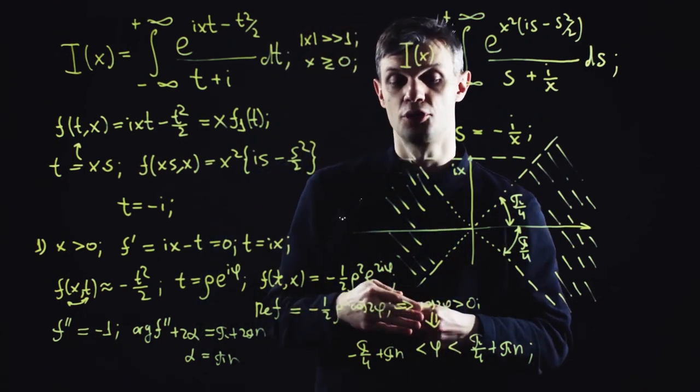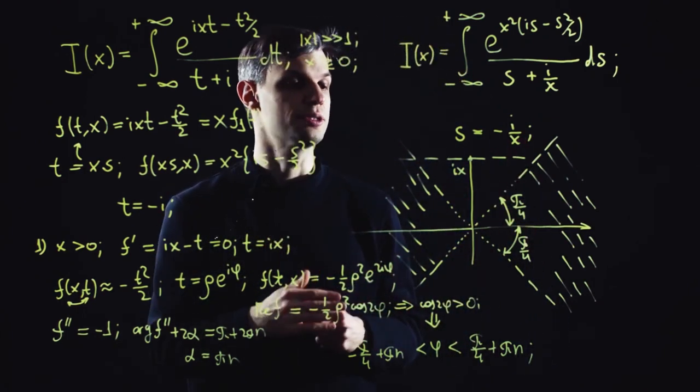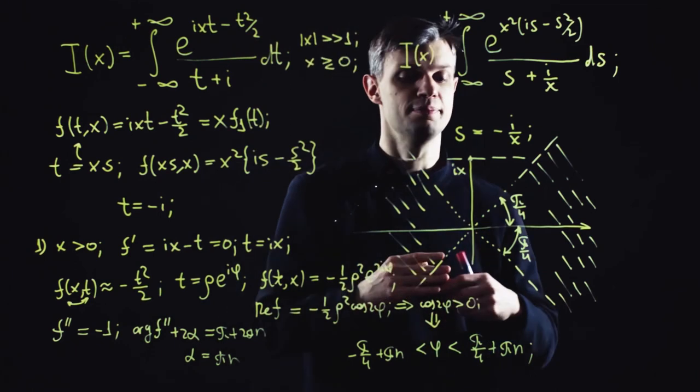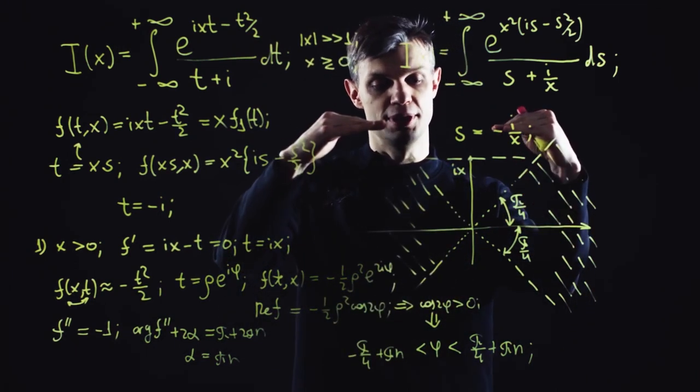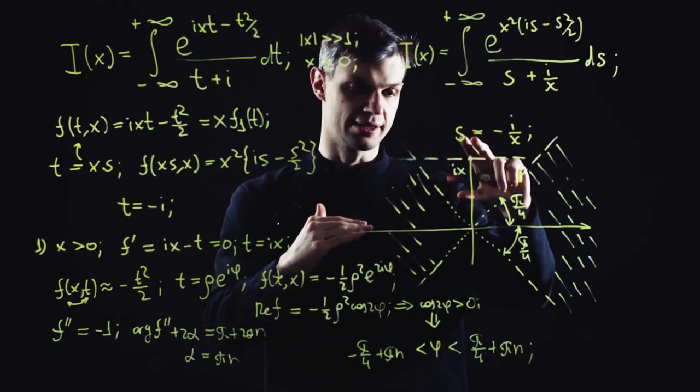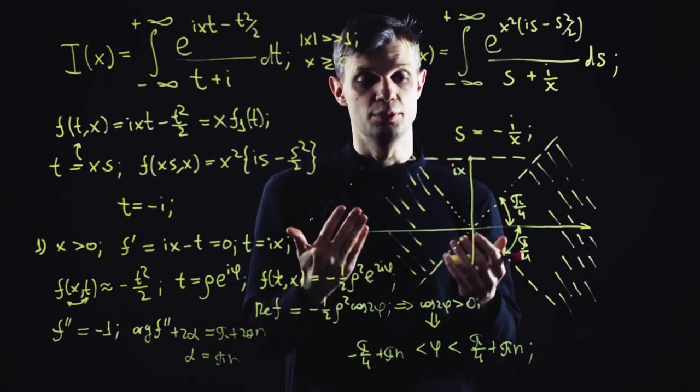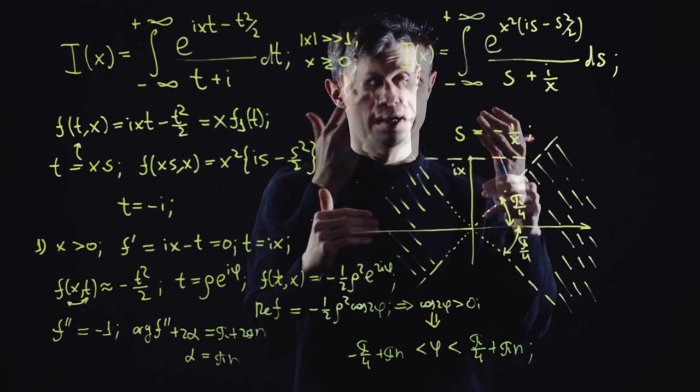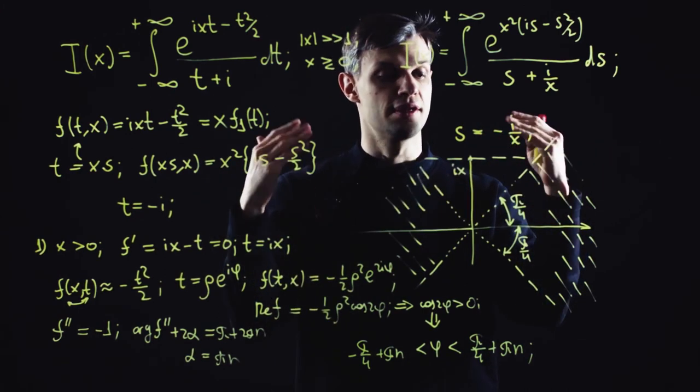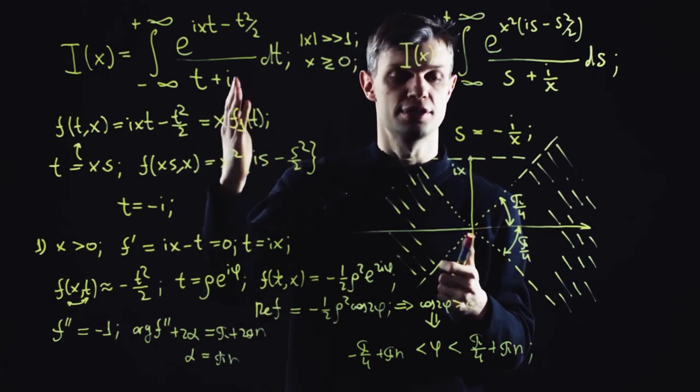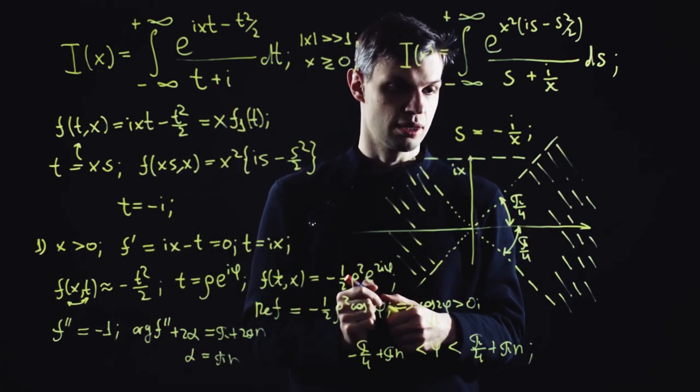So now the correct deformation of the contour is more or less obvious. It's a simple parallel displacement of the contour upward in a complex plane by x. This way it indeed will pass through the saddle in the steepest descent direction and its infinite legs will be positioned in the regions of convergence of the initial integral.